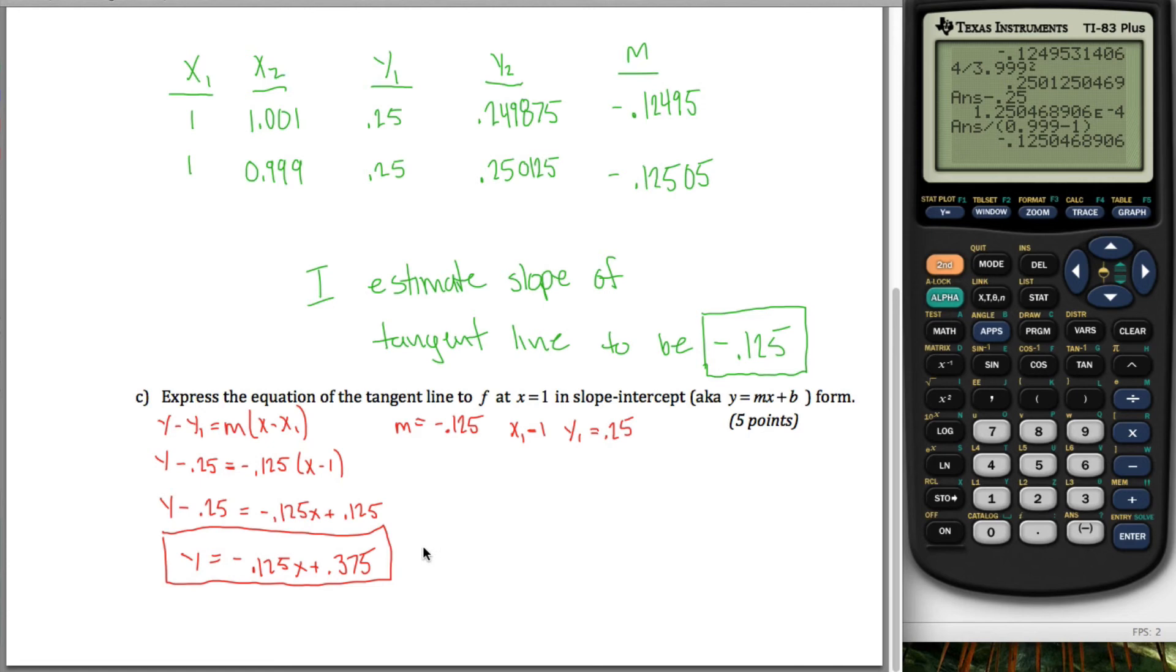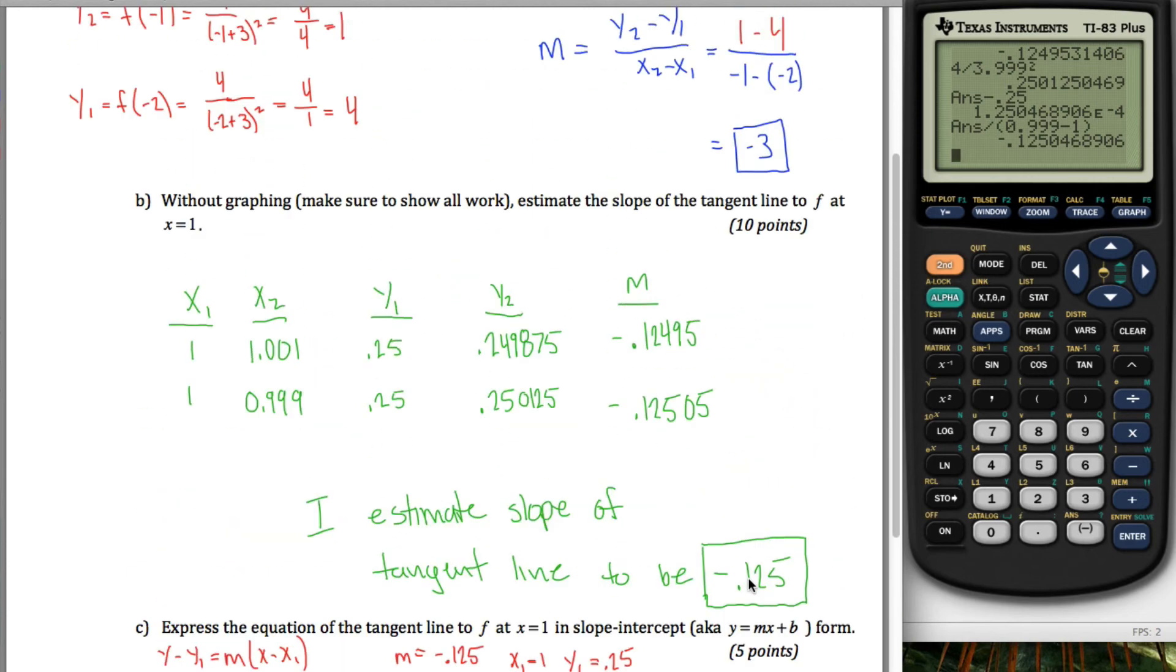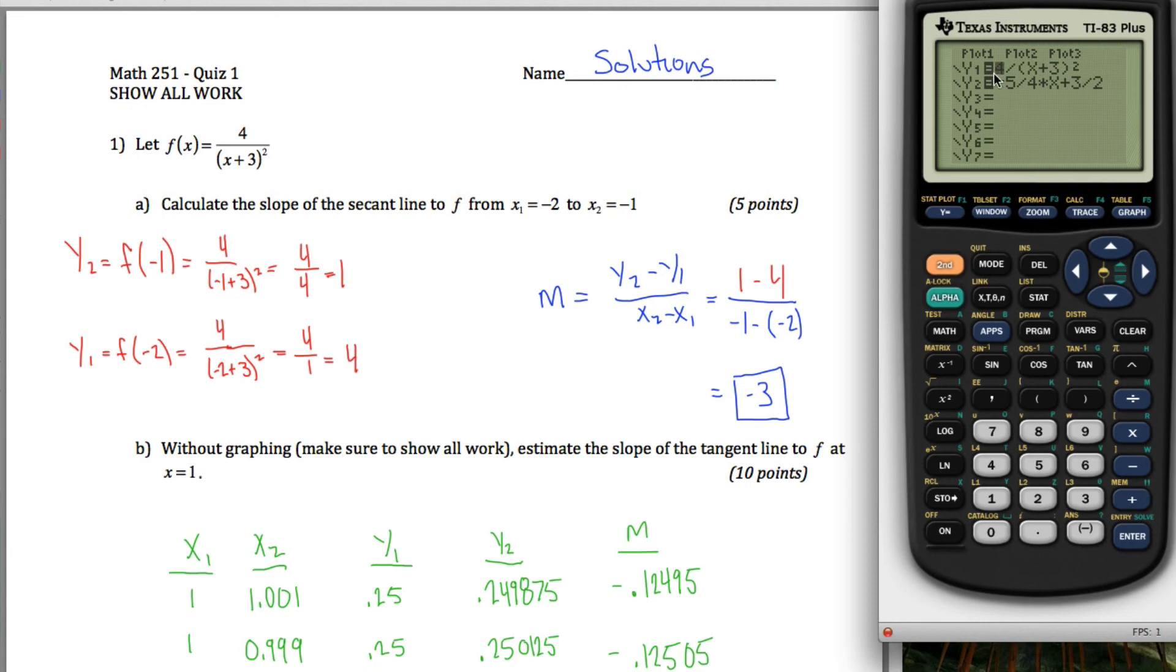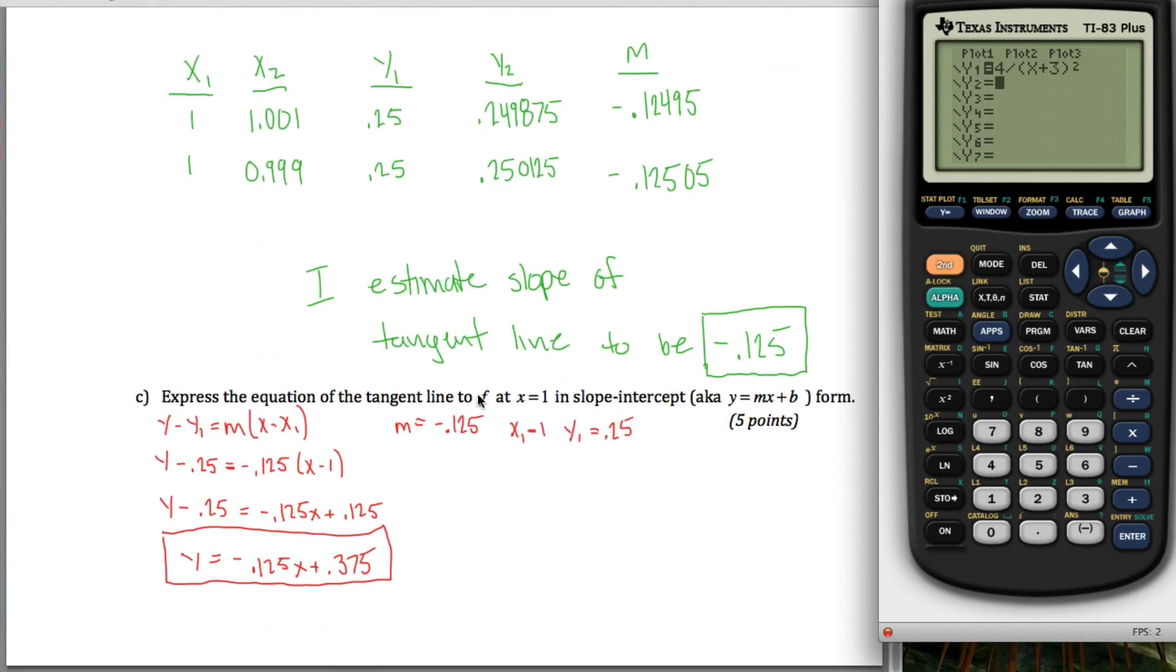So that's the end of the quiz. I'm actually going to take it a step further. What I'm going to do is I'm going to graph the original function. So I got y equals 4 over x plus 3 squared. I already have that in there. That's nice. And then I'm going to graph this tangent line. And again, this wasn't required on the quiz. Just kind of a way to check your answer, I suppose. Negative .125 x plus .375.